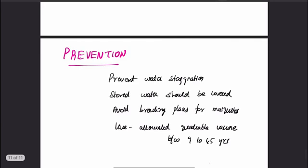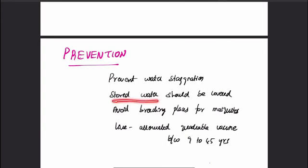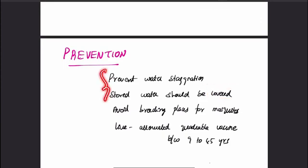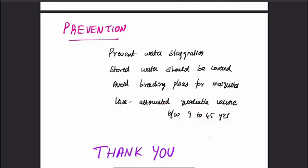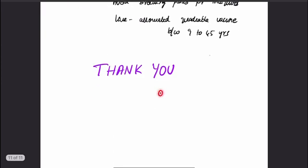Coming to prevention — prevention is always better than cure. Simple measures include preventing water stagnation to eliminate mosquito breeding places, and ensuring stored water in tanks and ponds is always covered. In some countries, a live attenuated quadrivalent vaccine is also available for Dengue, given between the ages of 9 to 45 years.